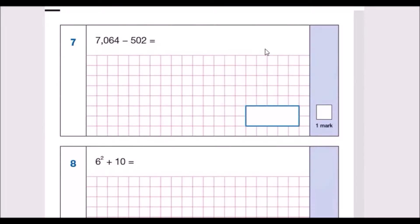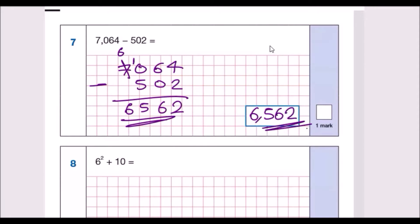Question 7: 7,064 minus 502. Just to be safe, use the column method. Always make sure you line up correctly and line up tens, units, hundreds and thousands. So 4 take away 2 is 2. 6 take away 0 is 6. You cannot do 0 take away 5, so you borrow off the 7, so it becomes a 6 and it becomes a 10 here. 10 take away 5 is 5, and 6 take away nothing is 6. So that's your answer: 6,562.